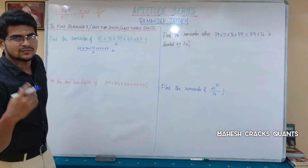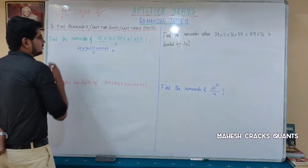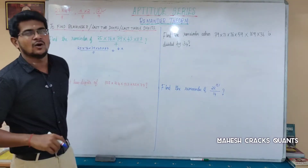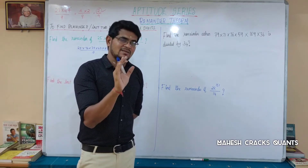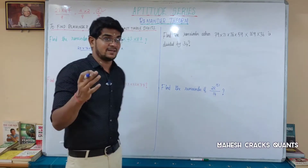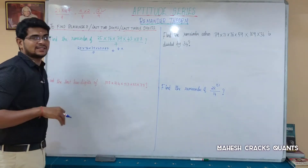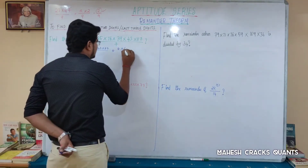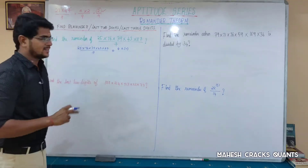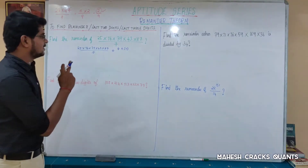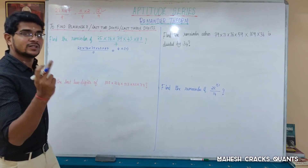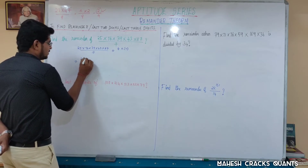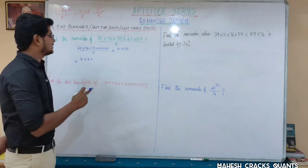How many times of 7 is there in 25? 3 times of 7 is 21, remainder 4. In 76, how many times of 7 is there? 11 times of 7 is 77 — that gives a negative remainder. 76 is nearby 77, so we use minus 1 instead of 6 remainder. So remainder is minus 1.